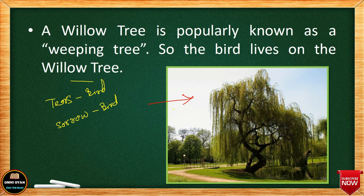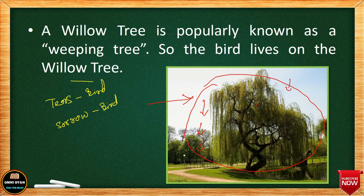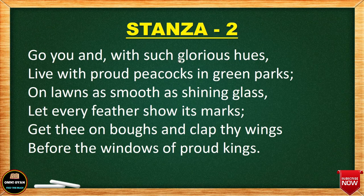Why is the willow tree considered a weeping tree? Look at the leaves and branches — they are all bending down. Whenever we are sad, we put our head down and cry. This willow tree exactly symbolizes sadness because it is putting its head down. The Kingfisher sits on the willow tree because all things connected to sorrow and sadness — this bird associates with all of them. That is why the bird sits on the willow tree.